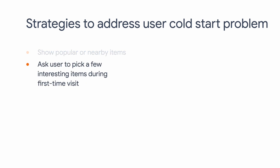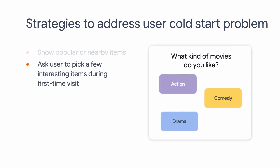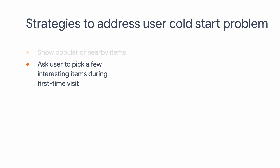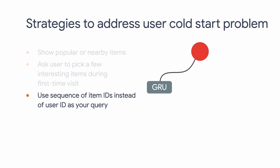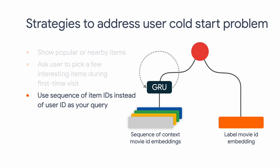The second approach is to directly ask the user to specify a preference during first-time visits. For example, if you are building a movie recommendation app, you can ask what kind of movies a user prefers when the user opens your app for the first time. The challenge of User Cold Start comes from the fact that the user embedding is unknown. So a third approach is to not use embeddings, but instead use the sequence of item IDs to model user preference — this is exactly the sequential recommendation approach we discussed in a previous video.